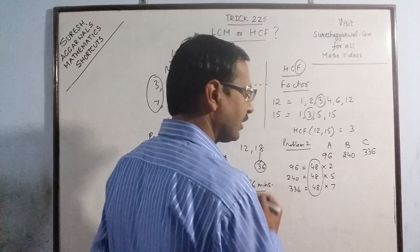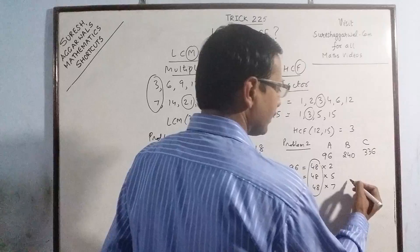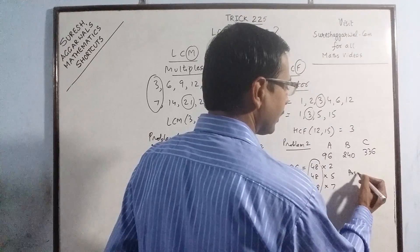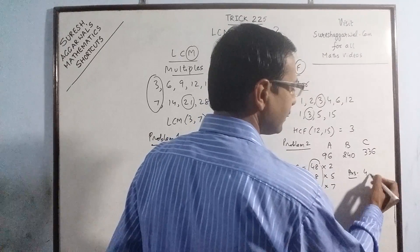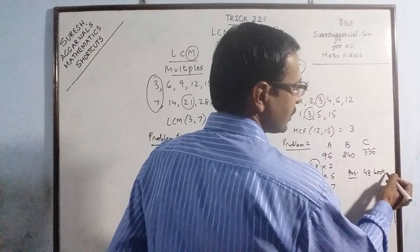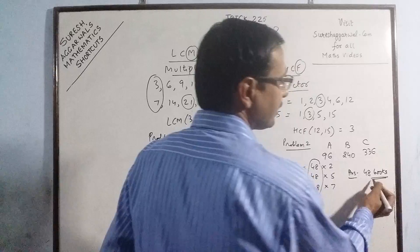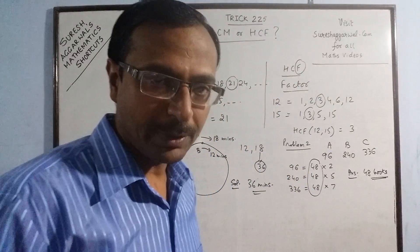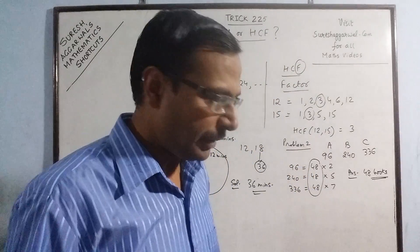48 is the common factor, so the answer is 48 books per stack. Stacks of 48 books have to be made for all three subjects.